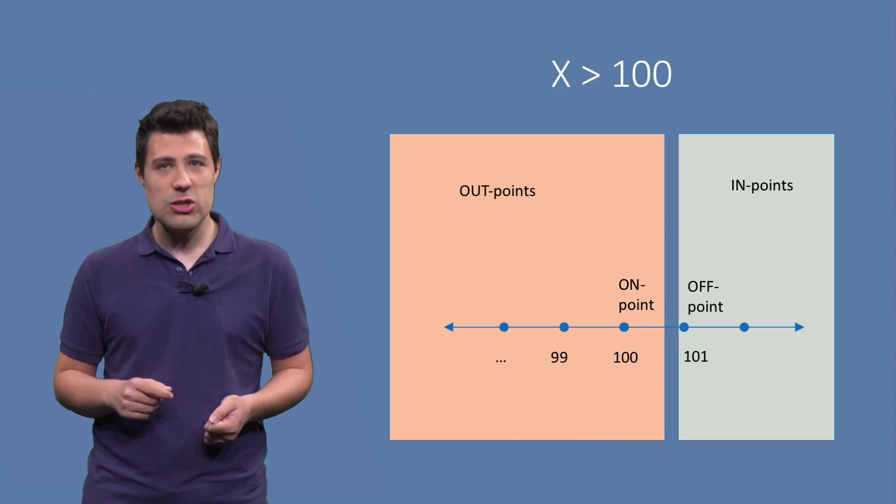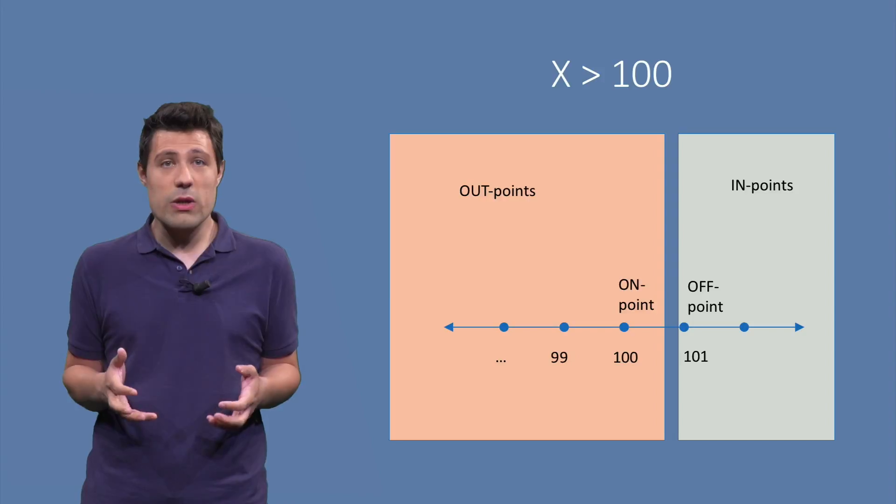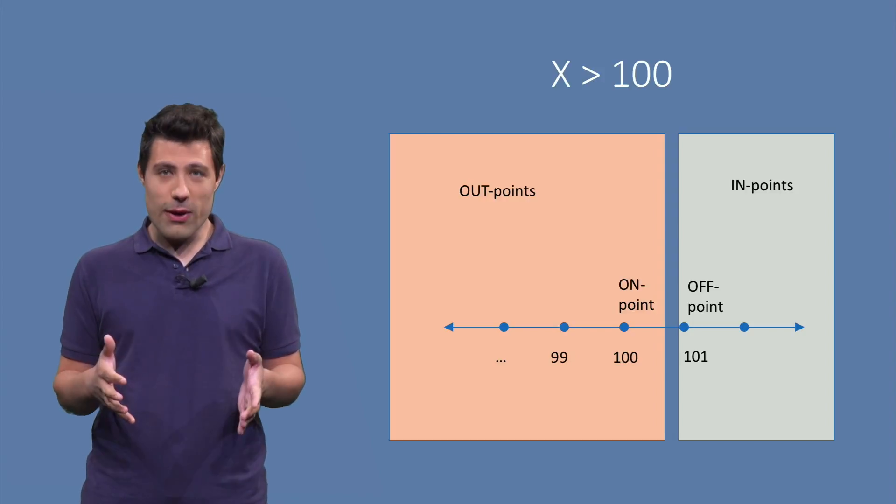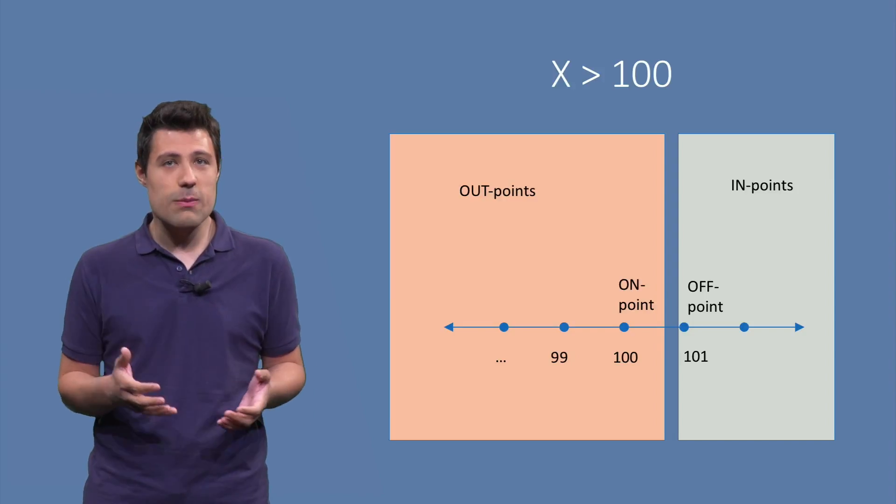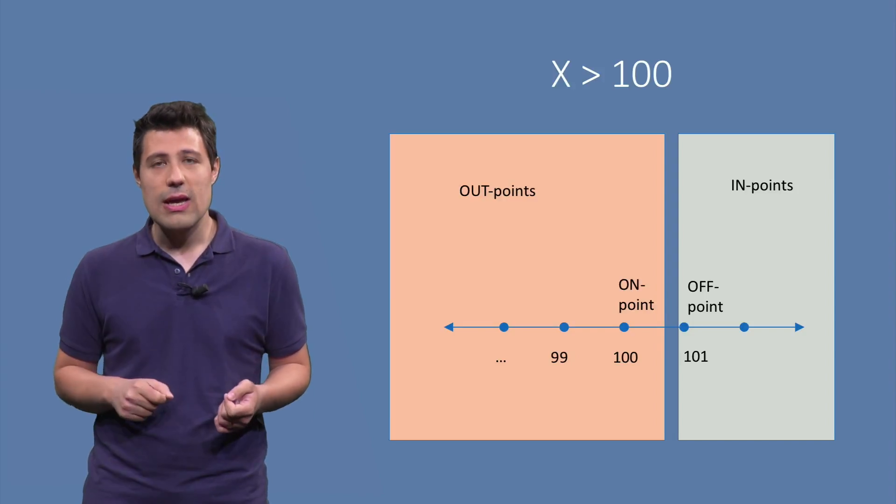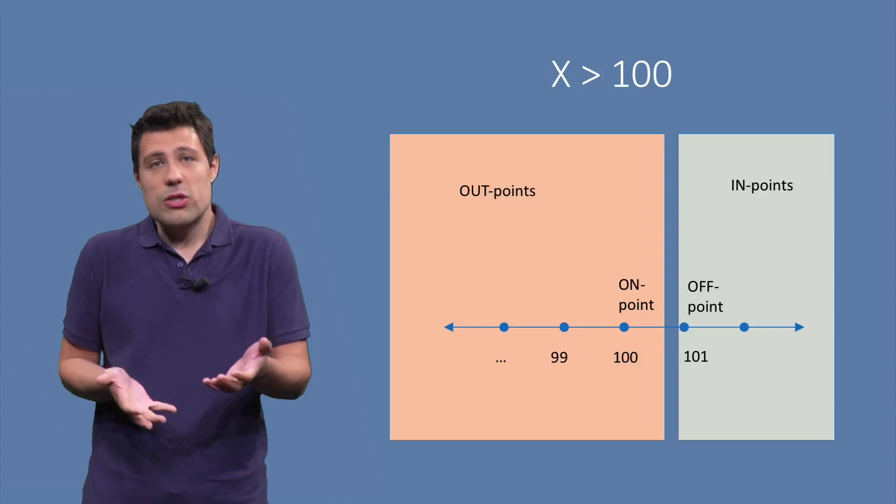For example, if we change this condition to x greater than 100, then the on point is still 100. But now the on point is an out point. And the off point, which is the closest number to the on point that flips the condition, in this case, we need the nearest point that makes the condition true, which is 101.